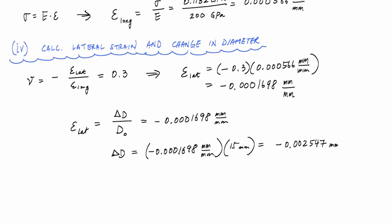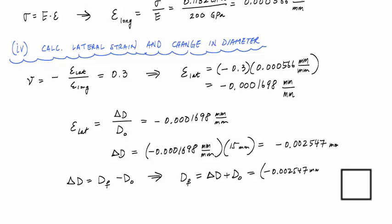And if you want to find what the final diameter of this was, the definition of the change in diameter is the D final, the final diameter minus the original diameter. And so you can use this relationship and just say that D F is equal to delta D plus D zero. And if you go ahead and plug and chug into this, you would get, which would tell me that the final diameter is 14.99745 millimeters. And these are what I was looking for.